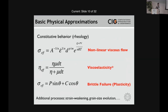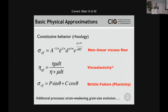Other things you might see in a nonlinear rheology include grain size evolution and strain weakening of both brittle and viscous terms. Commonly, we track finite strain — as that accumulates, we may weaken the friction angle or the cohesion, or both, in some form.